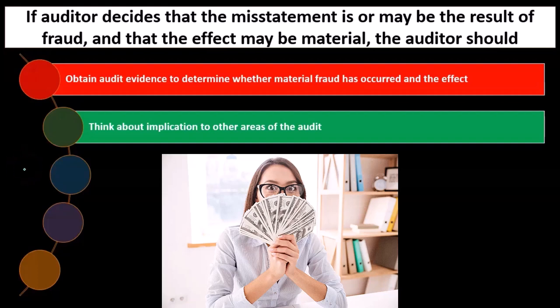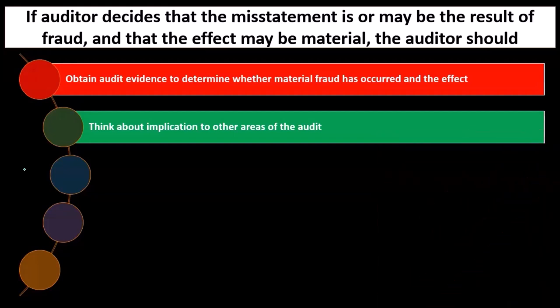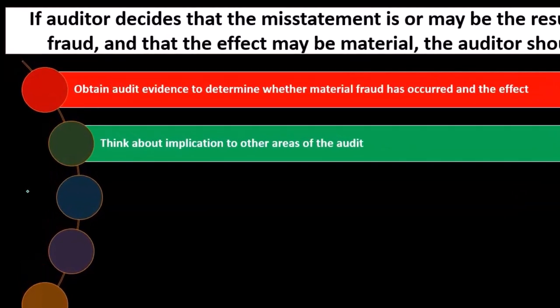We need to think about implications to other areas of the audit. If it's lower-level employees who committed the fraud, the question is what other areas do they have influence over — possibly not many, due to internal controls and separation of duties. If the fraud is at upper levels of management, it could be more pervasive because they have greater influence. We want to think about what effect this fraud has on other areas of the financial statements and the credibility of audit evidence.